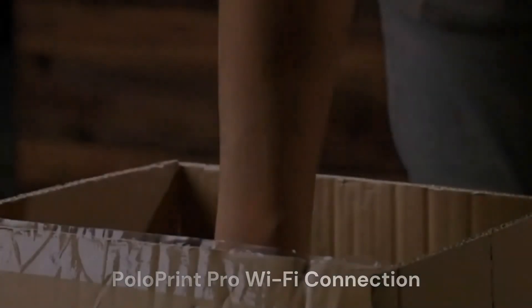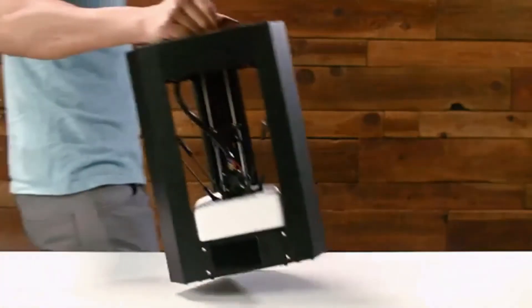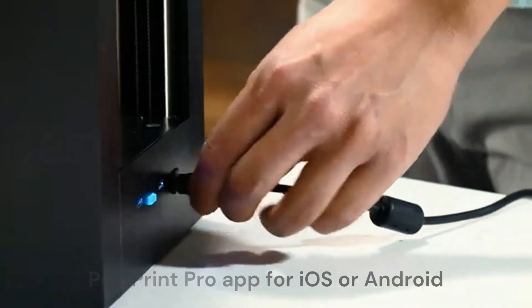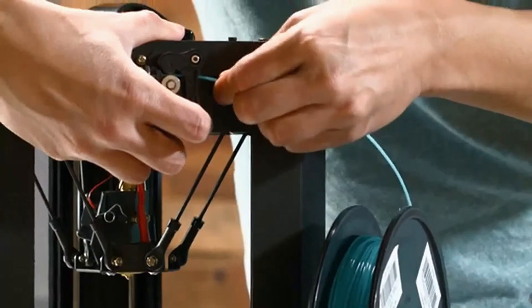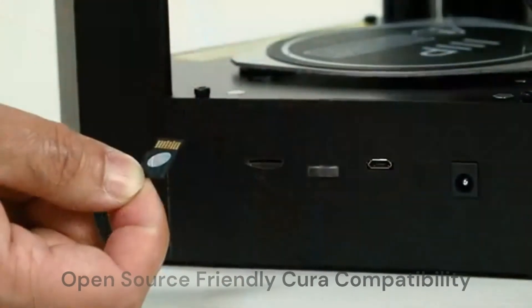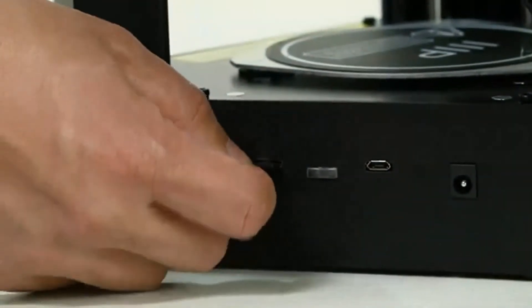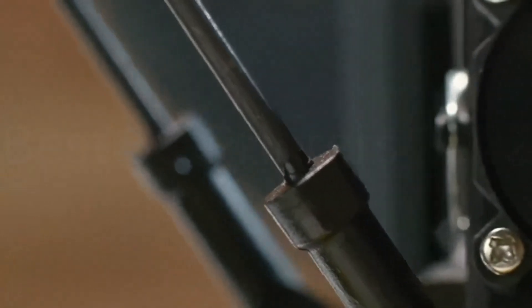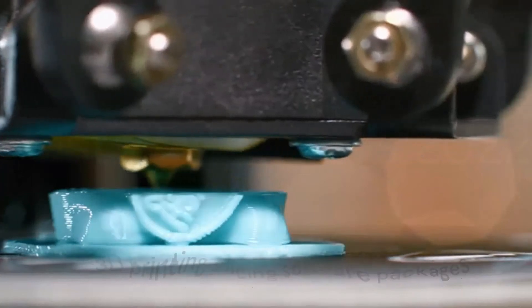PoloPrint Pro Wi-Fi Connection, connect to the printer over Wi-Fi using the updated PoloPrint Pro app for iOS or Android. Open Source Friendly Kura Compatibility, the industry standard firmware is great for people who want to tinker. The printer is compatible with Kura and many other open source 3D printing slicing software packages.